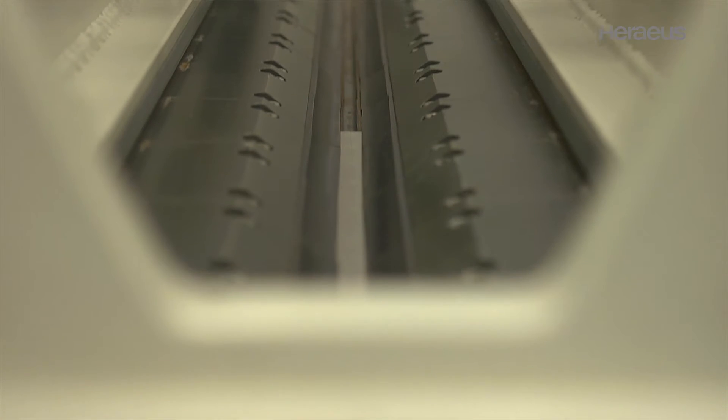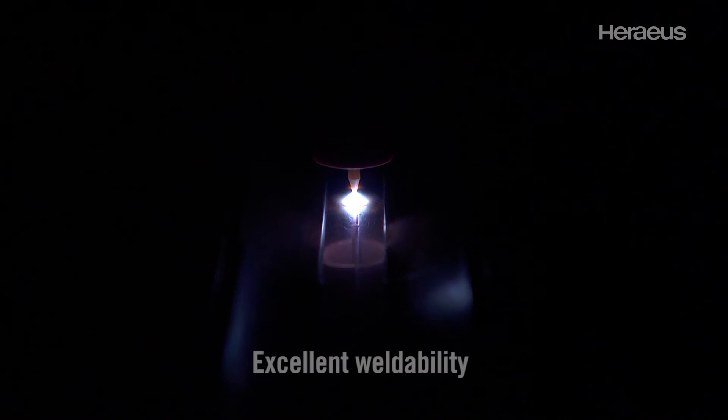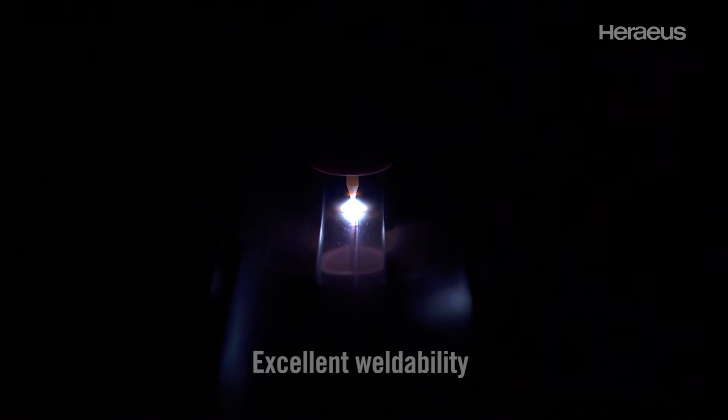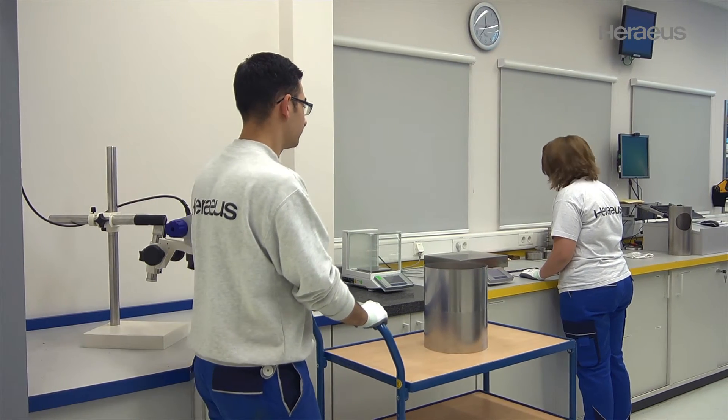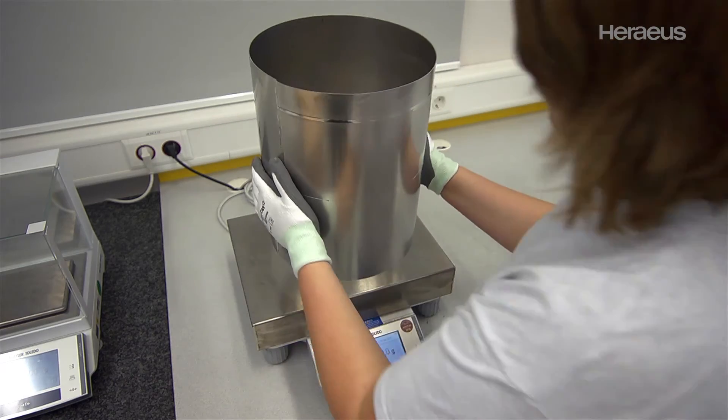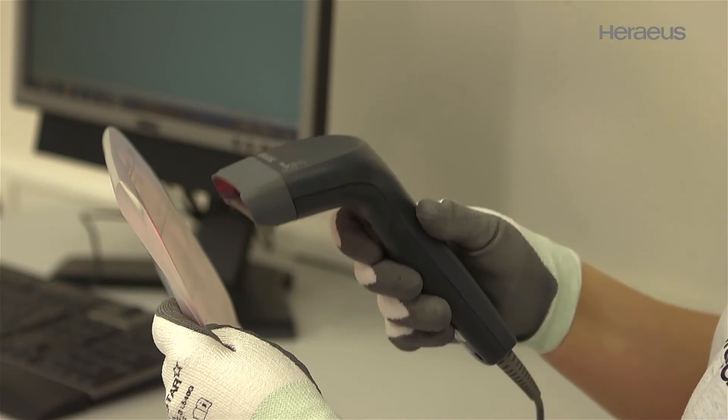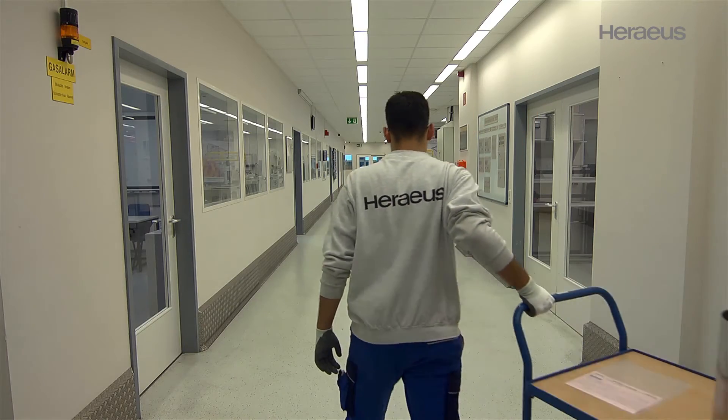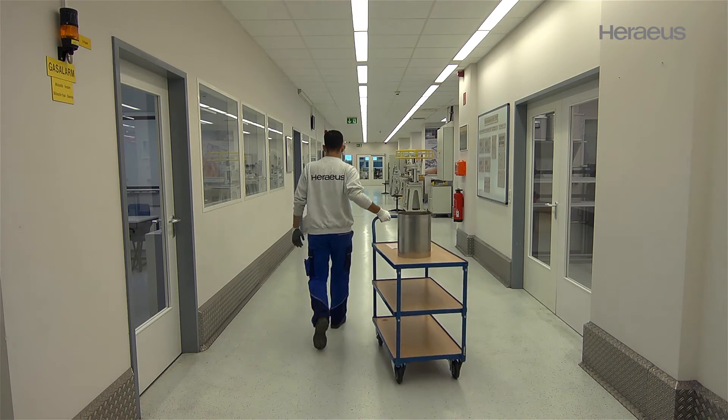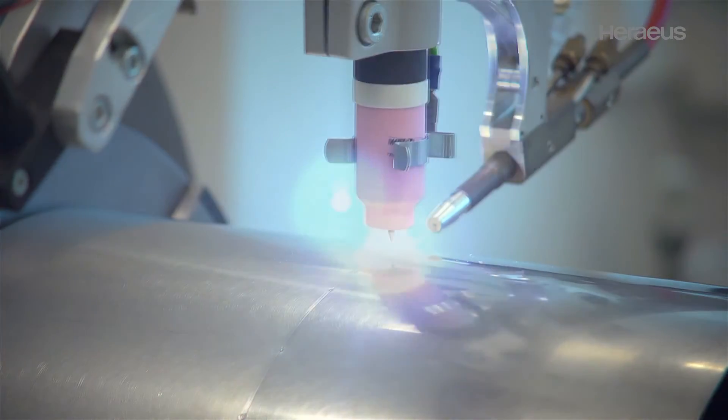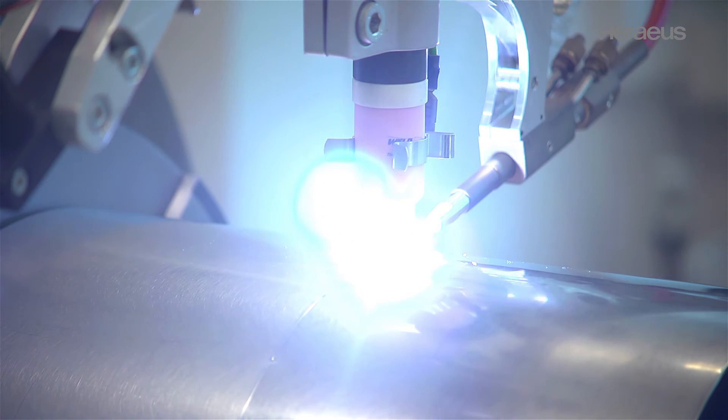For larger component dimensions, the sheets and tubes can be joined using TIG welding, whereby the high material quality is also maintained. The weldability of the Herias DPH materials is very good. Compared with other materials produced by powder metallurgical routes, they are outstanding for the excellent strength of the weld joints.